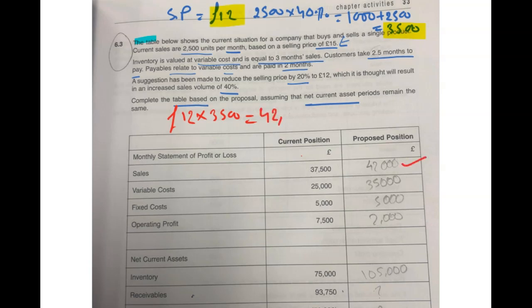Variable costs are £25,000 at this moment. But how can you find the proposed one? How did you get £25,000? At the current position we are producing 2,500 units selling, so each unit costs £10. £25,000 divided by 2,500 - the variable cost of each unit is £10.